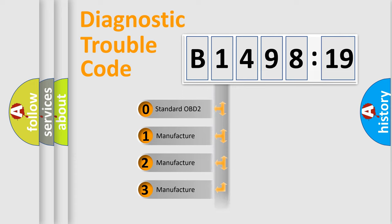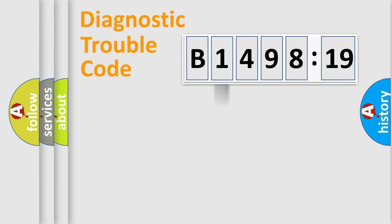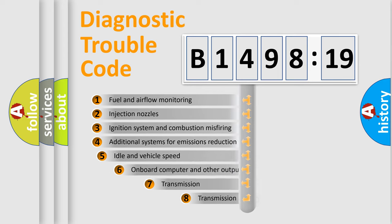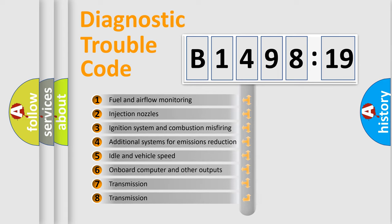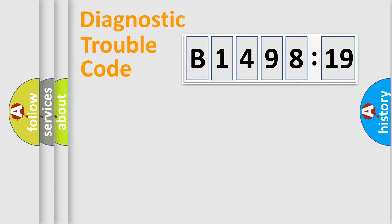If the second character is expressed as zero, it is a standardized error. In the case of numbers 1, 2, or 3, it is a more precise expression of a car-specific error. The third character specifies a subset of errors. The distribution shown is valid only for the standardized DTC code. Only the last two characters define the specific fault of the group.